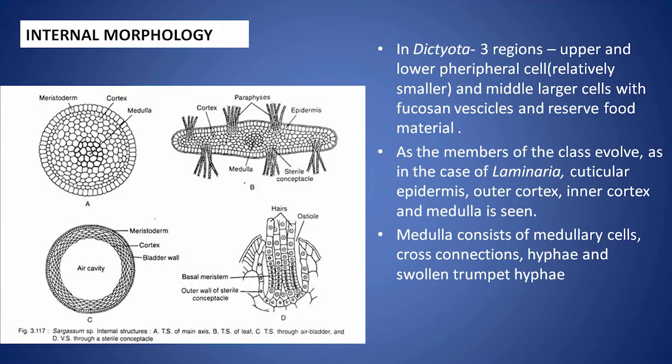Coming to the internal morphology of the Phaeophyceae members, in the lower orders like Ectocarpales, for example Dictyota which comes under Ectocarpales, there are three regions found in this Dictyota.